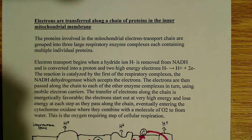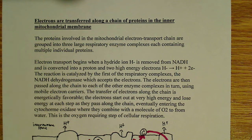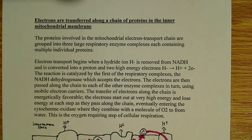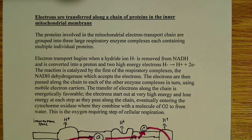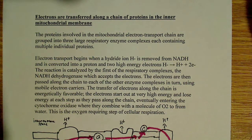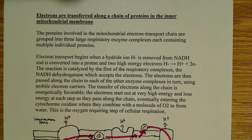The first complex is called the NADH dehydrogenase complex. Electron transport begins with the hydride ion being removed from NADH and converted into a proton — H⁺ — and two high-energy electrons. NADH donates two electrons to the NADH dehydrogenase complex, the first respiratory complex. The electrons are then passed along the chain. In the case of NADH, they're passed from complex 1 to 3 to 4.